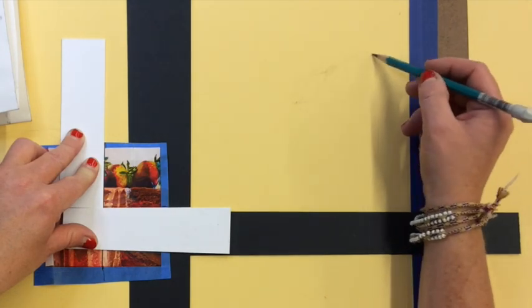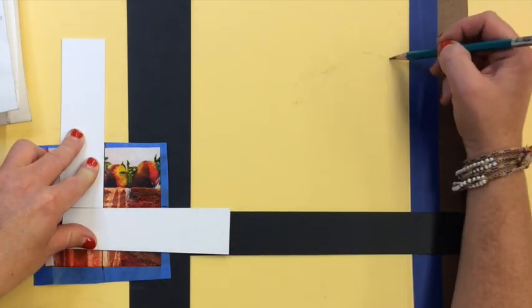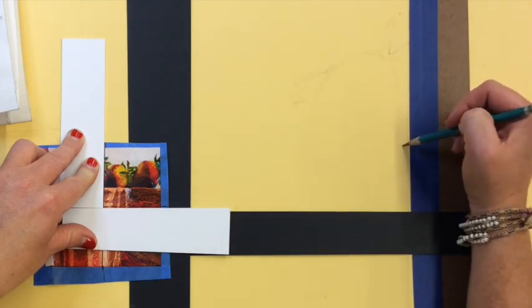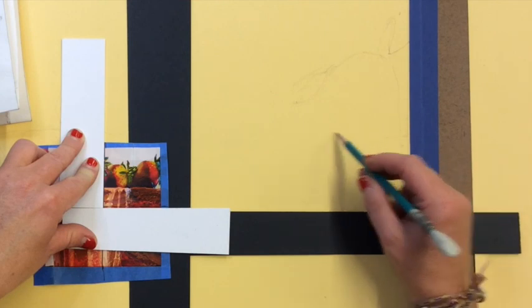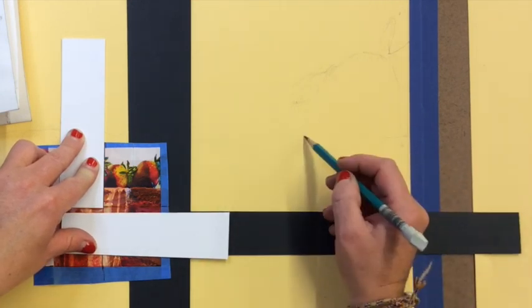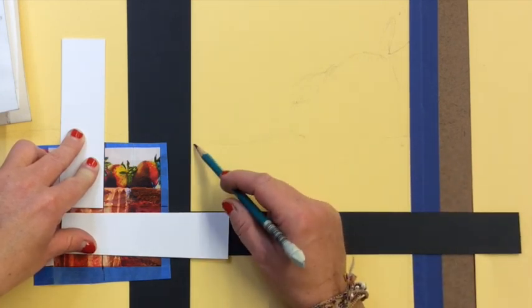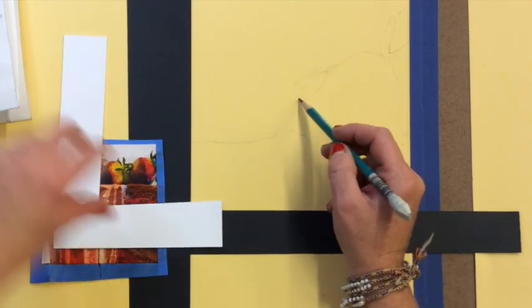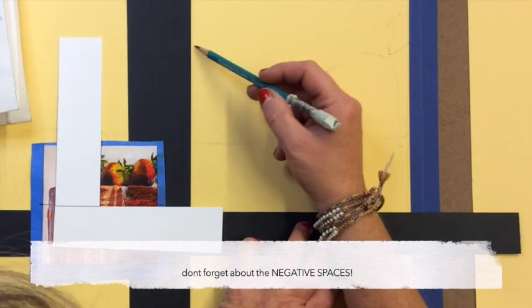I'm sketching it out lightly. I want to emphasize lightly. I'm looking at all of the shapes, laying that out, knowing that I can always erase my lines if I make a mistake, which is why we sketch out those basic shapes.